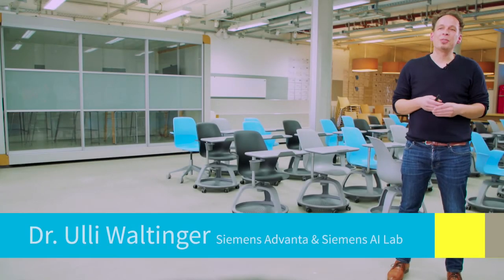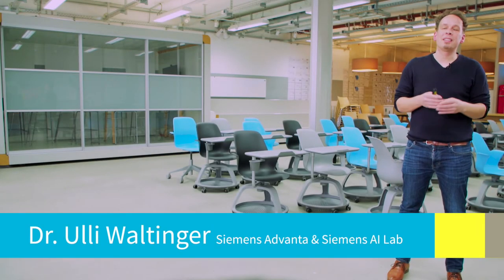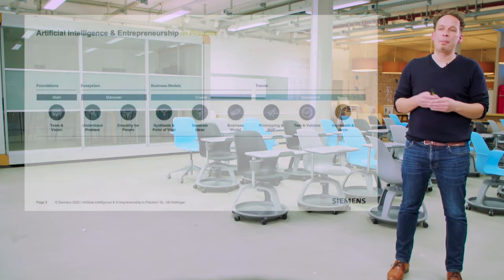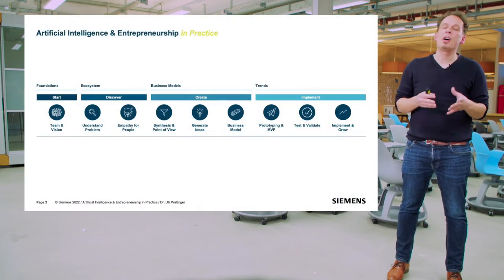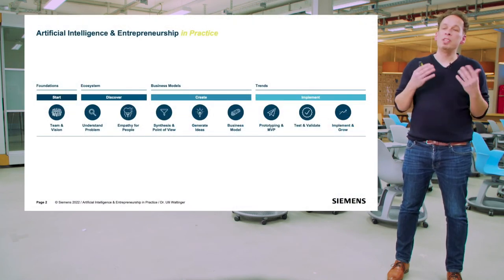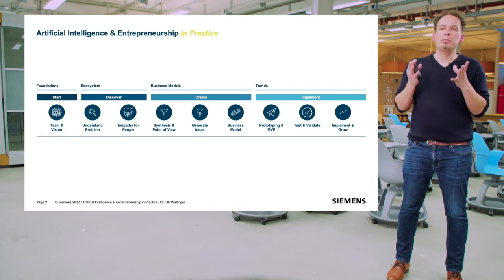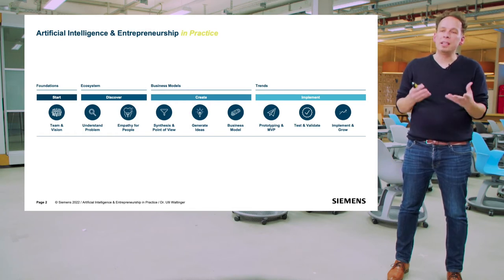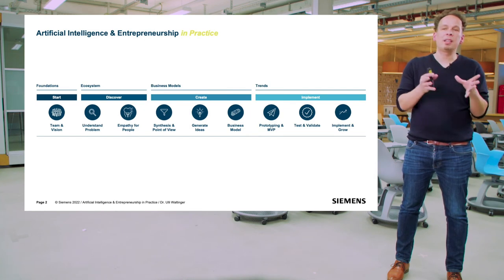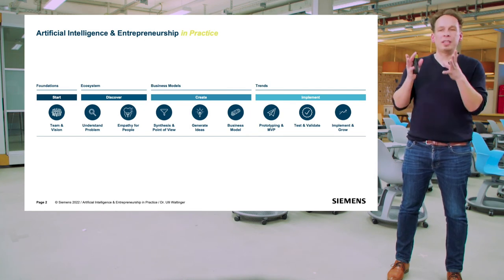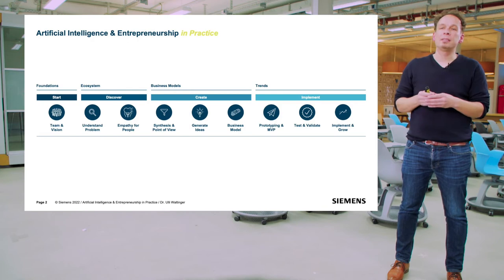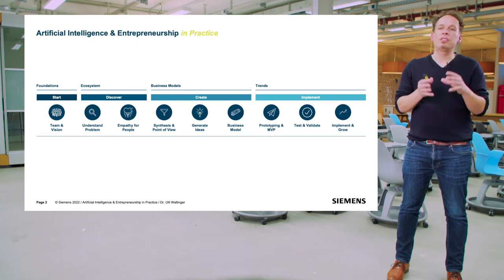Welcome back to data and business understanding. Recap: we have a process called CRISP-DM, cross-industry standard process for data mining. We use that as a structured approach to mitigate the risk of failing your projects. It goes from business understanding to data understanding, to data preparation, modeling, evaluation, and deployment.